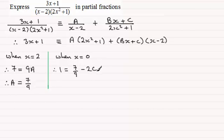Now if I rearrange this by adding 2c to both sides and subtracting 1 from both sides, I'm going to get 2c equals 7 ninths minus 1, which is going to be minus 2 ninths. And it follows from this that if I divide both sides by 2, then I get c equals minus 1 ninth.